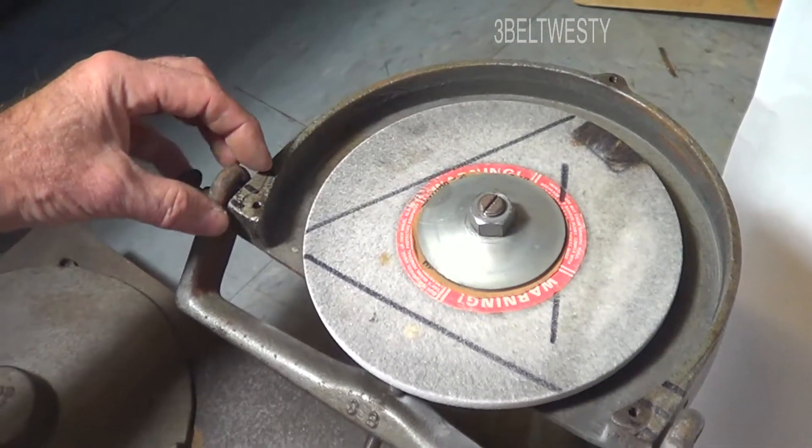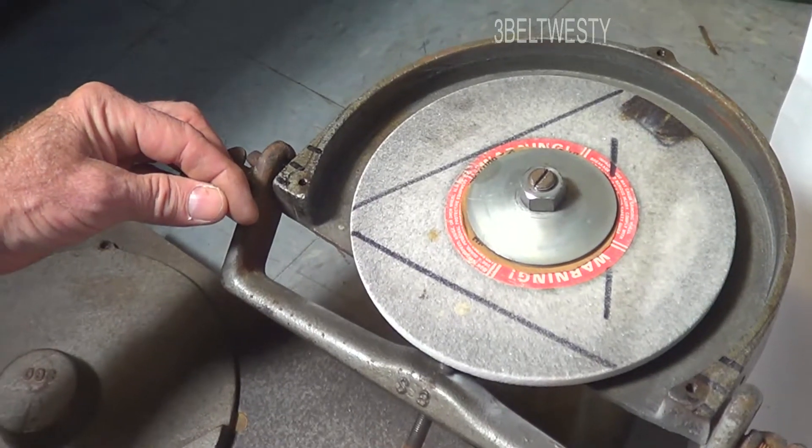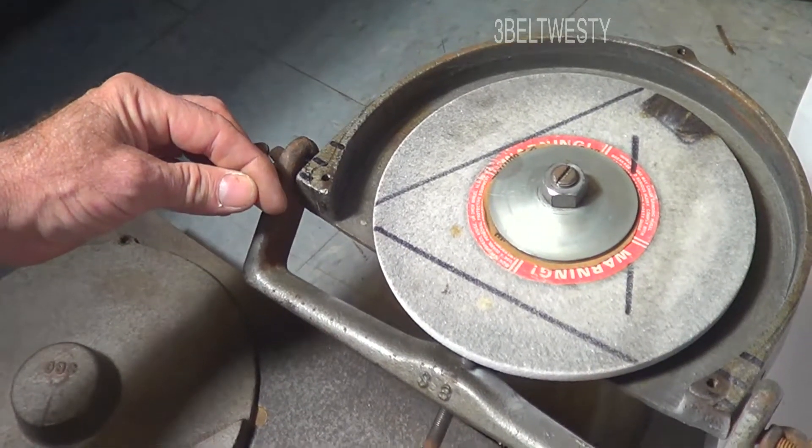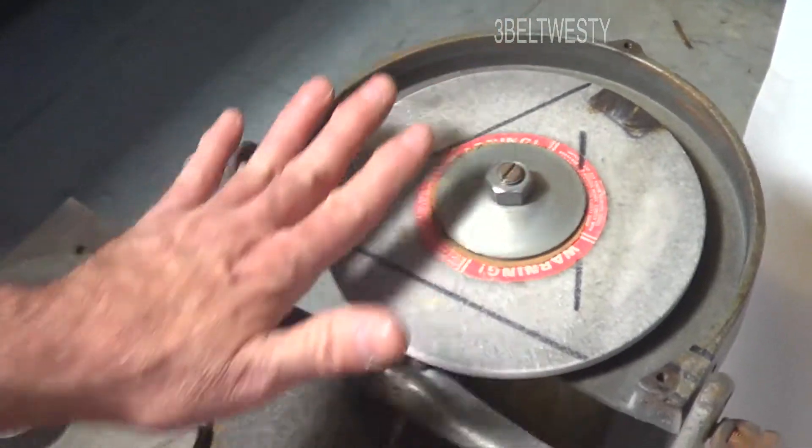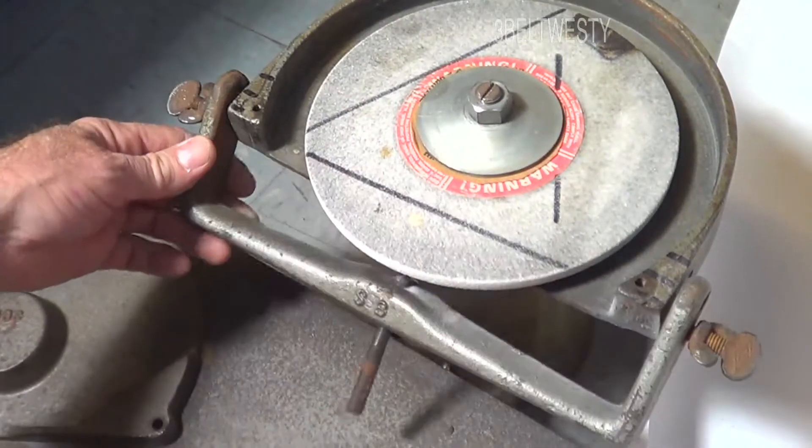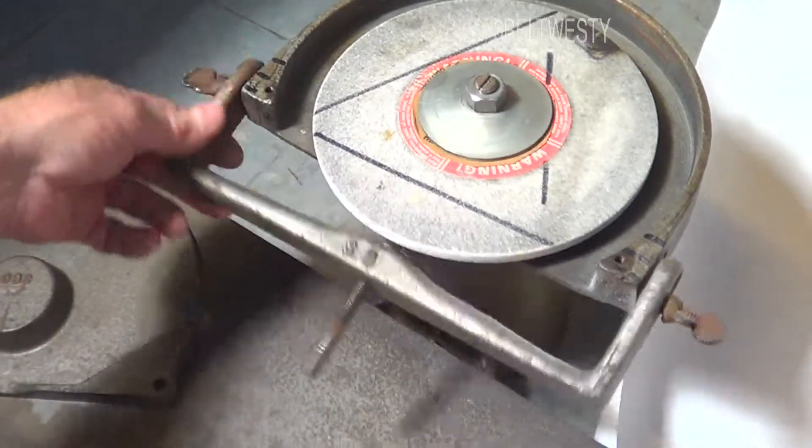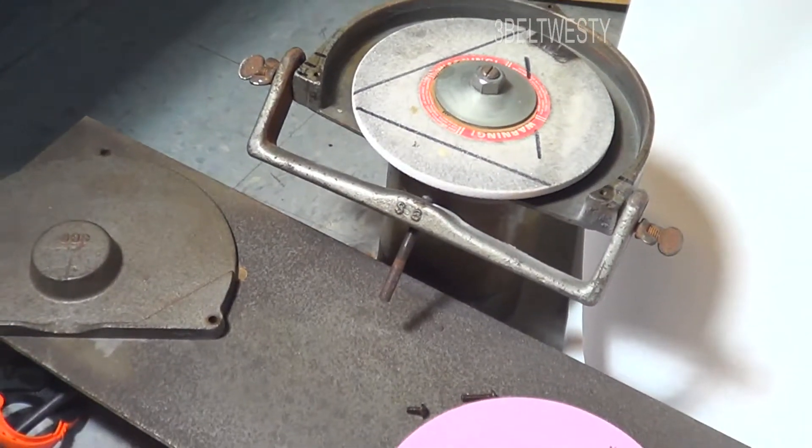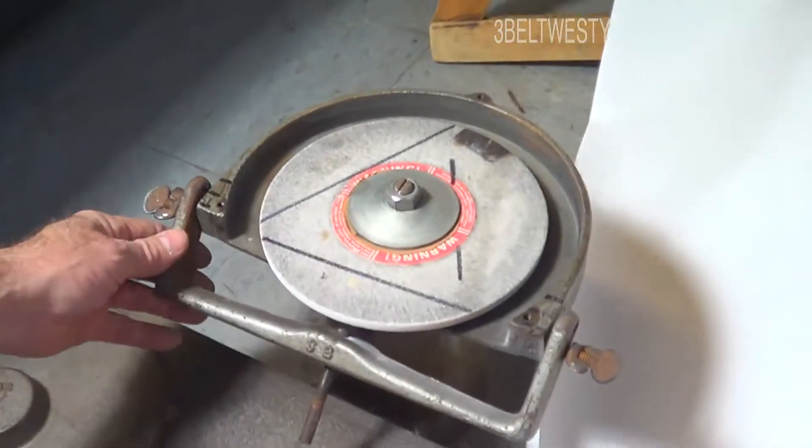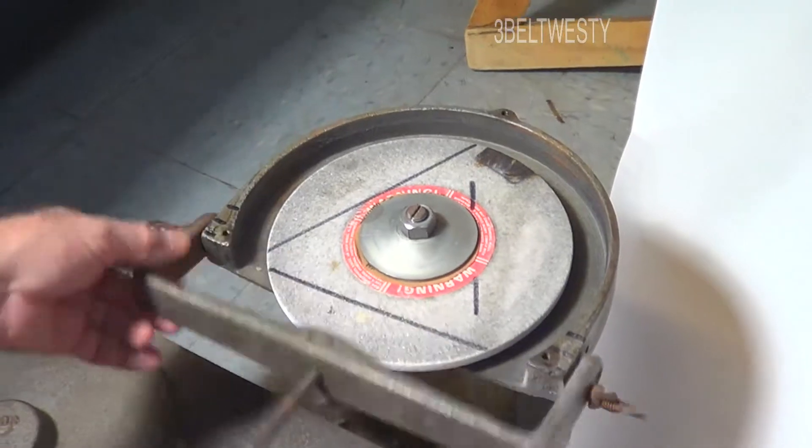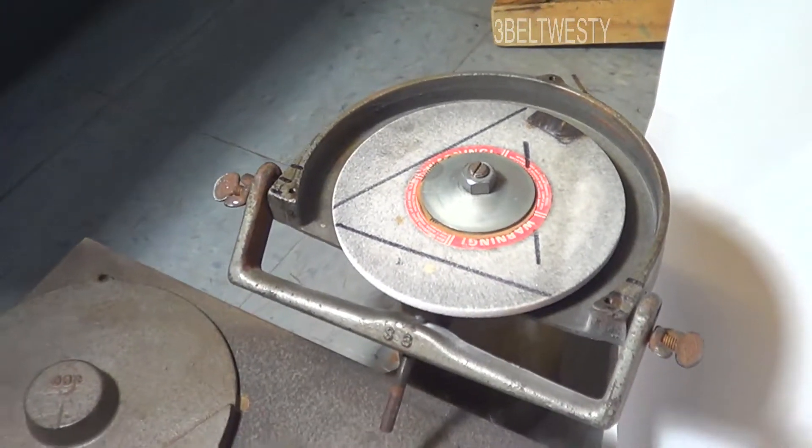Otherwise, you'd have to put the pivot out here, which a more modern machine does. The 911 does that. It has a movable piece for the adjustment. Blademaster does, Blackstone, all the more modern ones. But this is the video just showing the older machine from 1946.